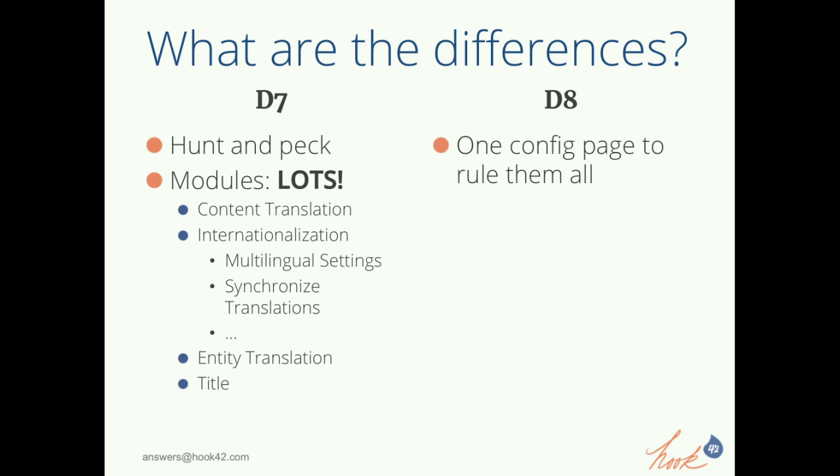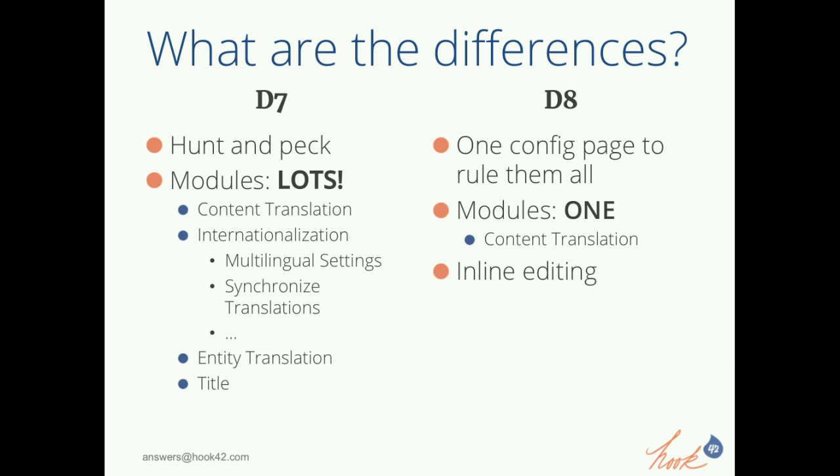Once you add enough modules and configure enough things, it's pretty much going to work. In Drupal 8, there's one config page to rule them all — no hunting and pecking. There is one module: the content translation module, in core. You don't have to go through all the contrib and figure out which modules you need, which ones are relevant. It also comes with inline editing, making it so much easier for your translation team. You have block visibility — blocks can be visible based on language — and you can have fallback per entity, which is amazingly powerful.